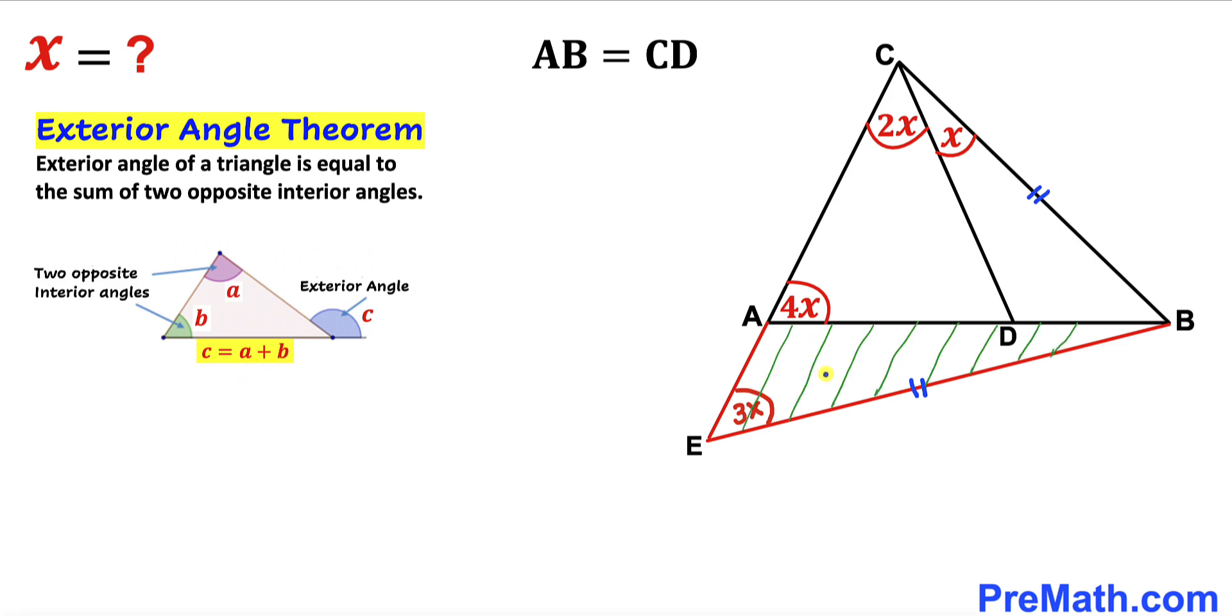Now in our case, let's focus on triangle ABE. We can see that this is our exterior angle, so therefore this angle has to be X.